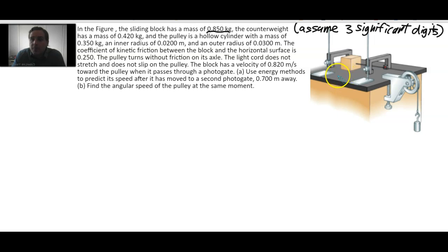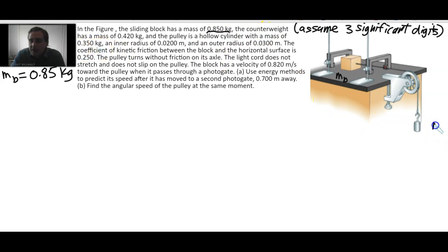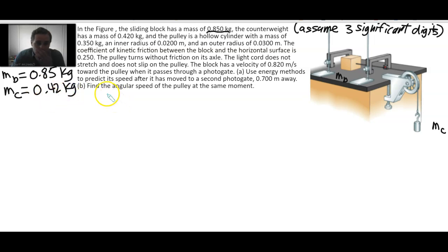So let's call the mass of the block MB = 0.85 kilograms, and the mass of the counterweight MC = 0.420 kilograms. The pulley is a hollow cylinder, and a hollow cylinder has a certain rotational inertia shape.